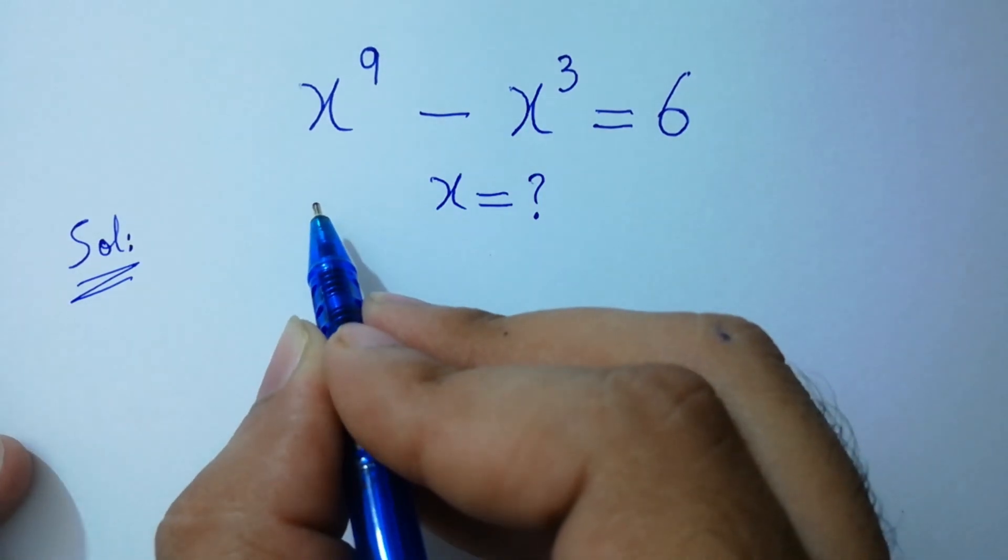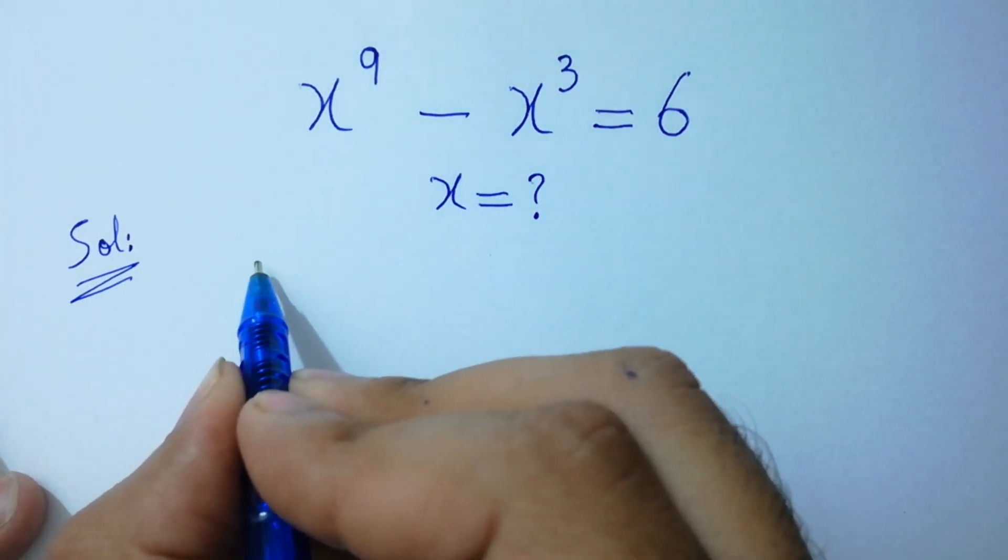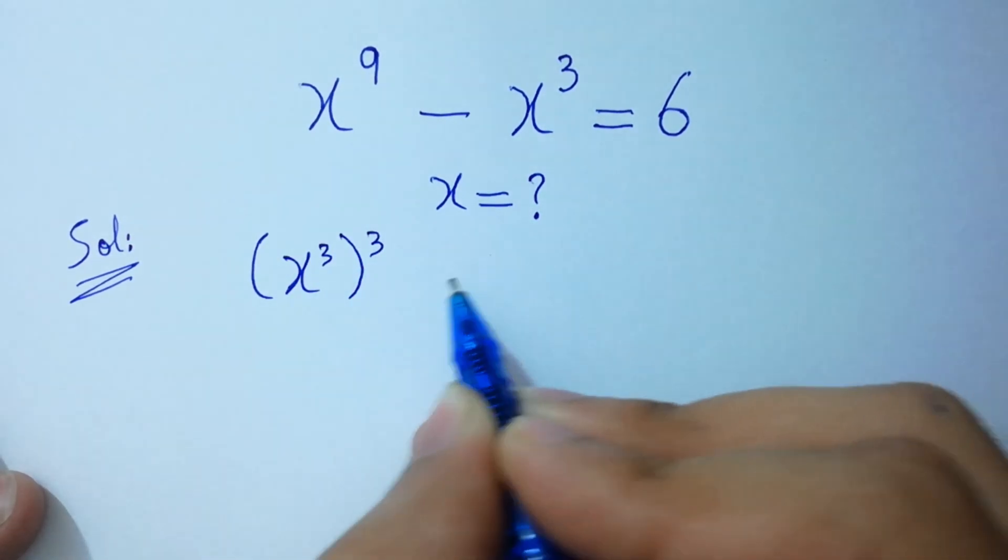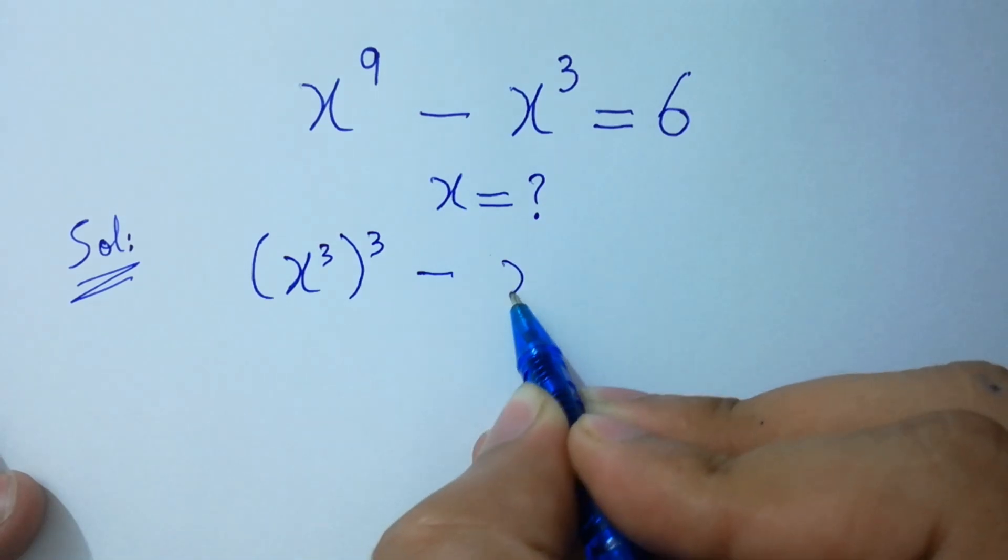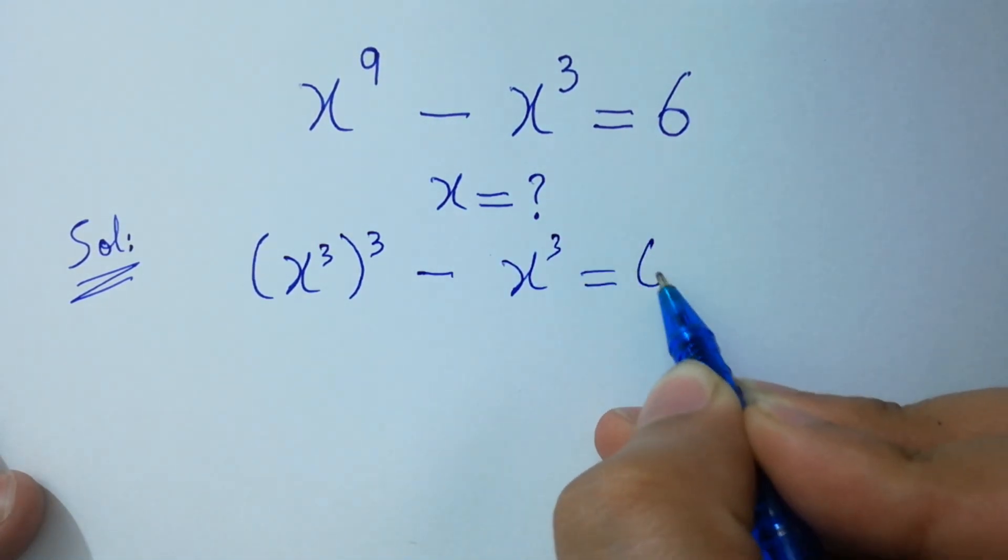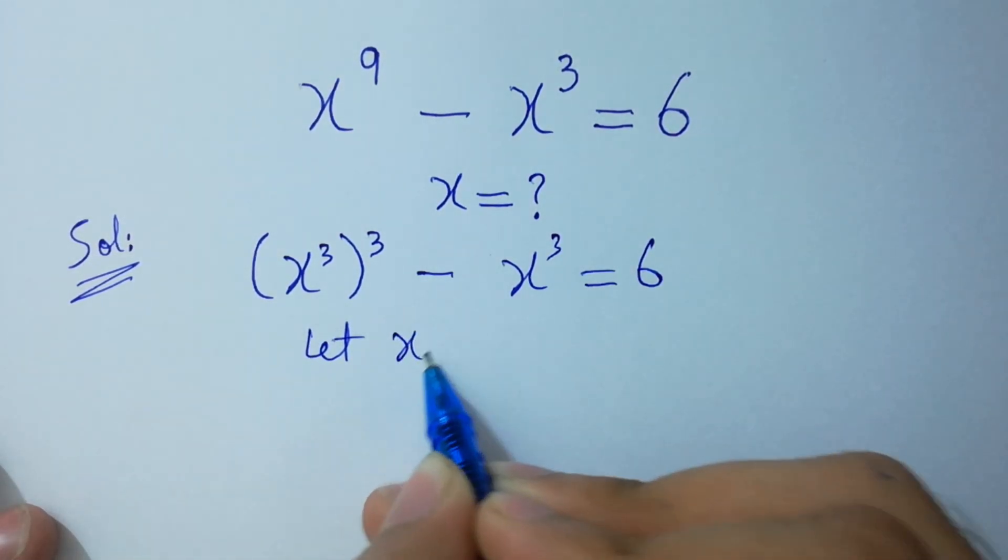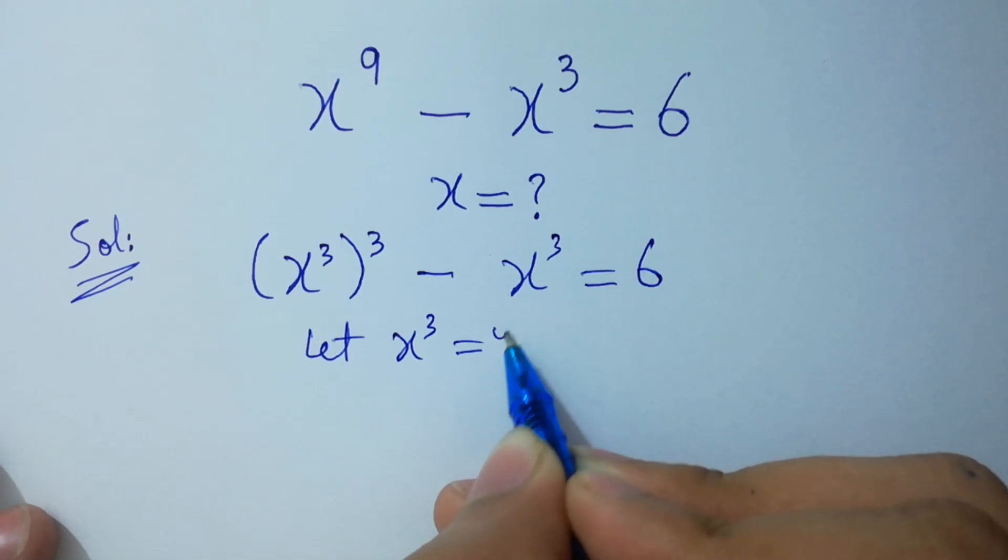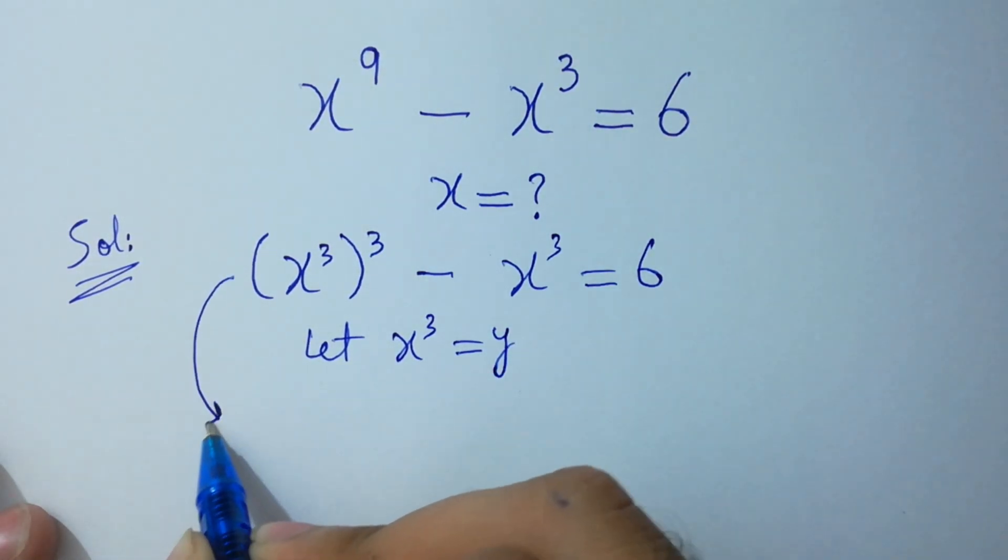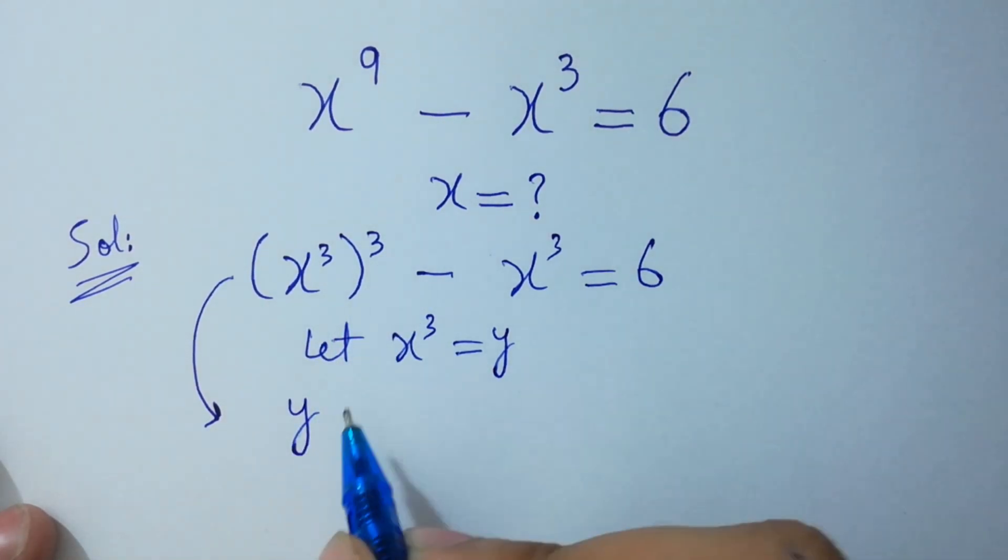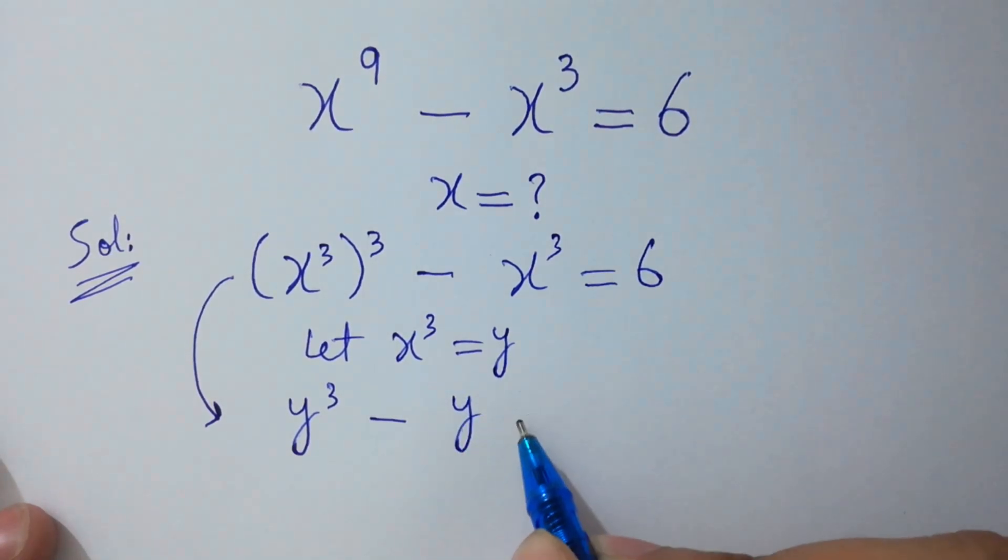Let x to the power 9 is same as x cube to the whole power cube minus x cube equal to 6. Let x cube equal to y. This equation will change into y cube minus y equal to 6.